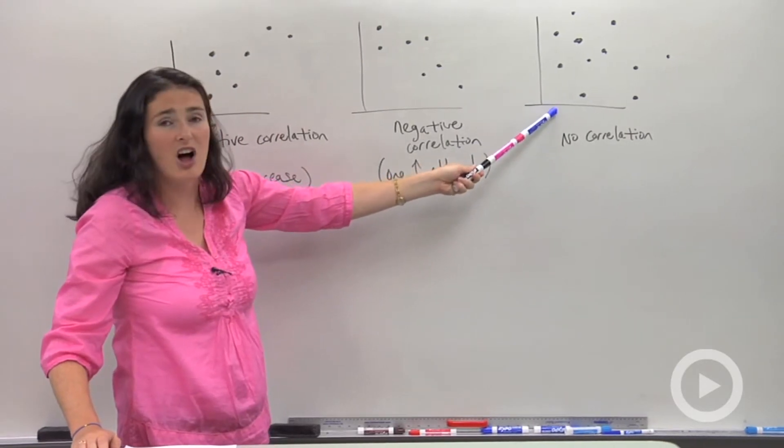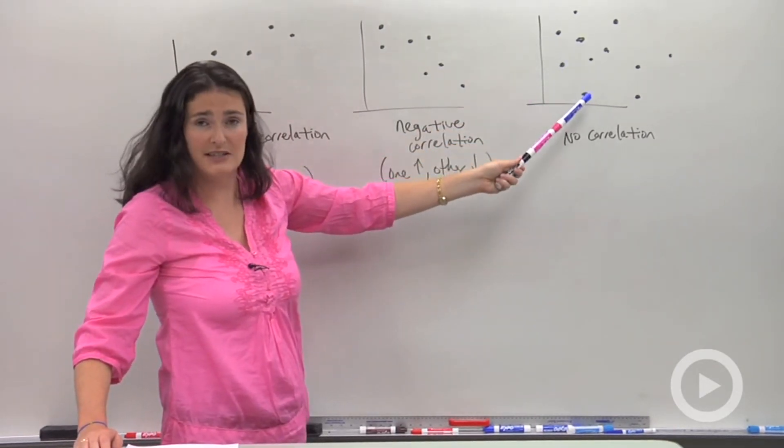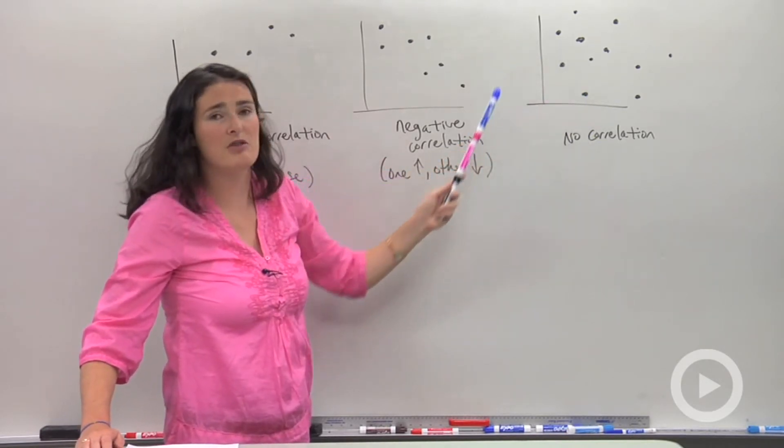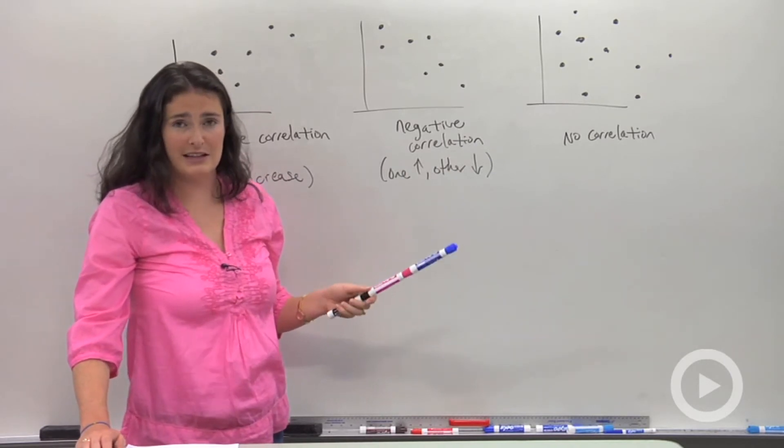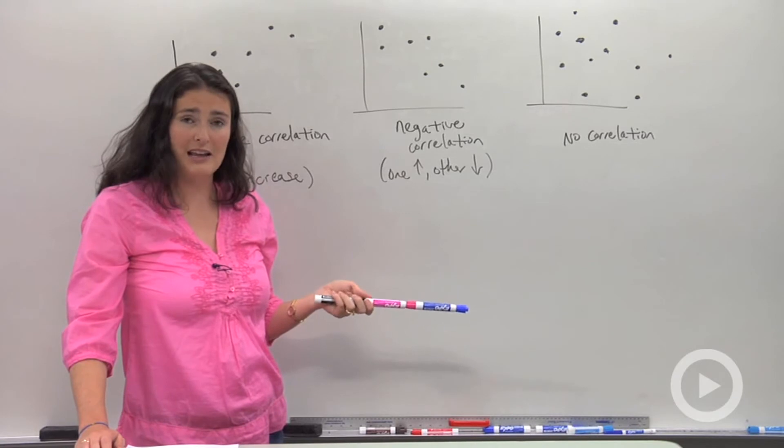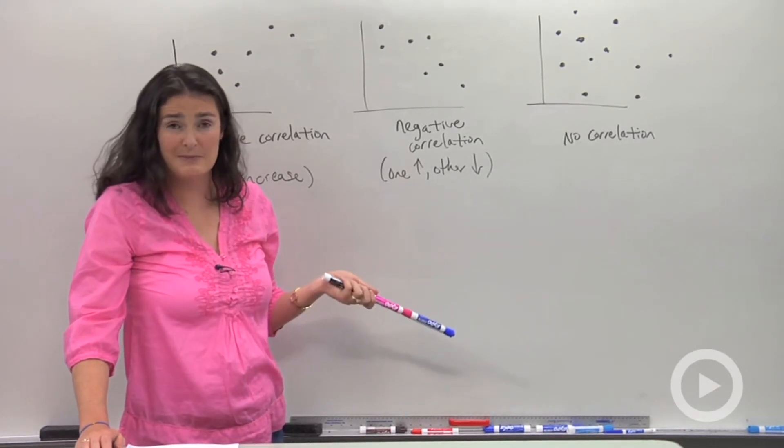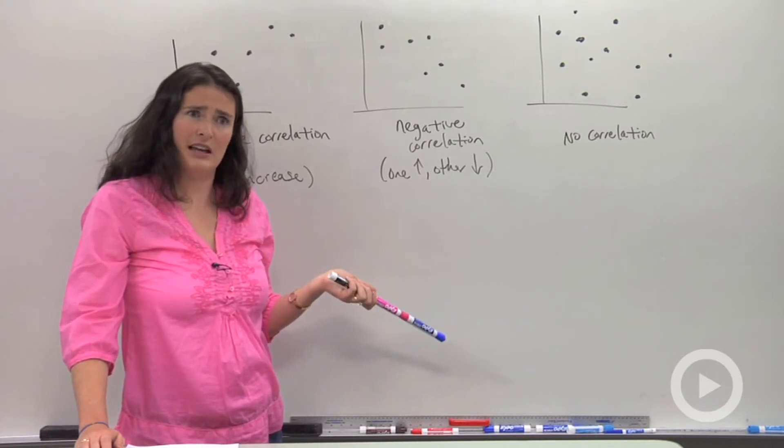Lastly, sometimes we have what we call no correlation. That's when the dots are just out there in the scatter plot with no real trend you can see. They're like randomly thrown out there. Sometimes variables are not correlated at all. Things like how tall you are and what grades you get in school. Those things are totally unrelated to each other because people who get good grades aren't always tall and people who are tall aren't always getting good grades.